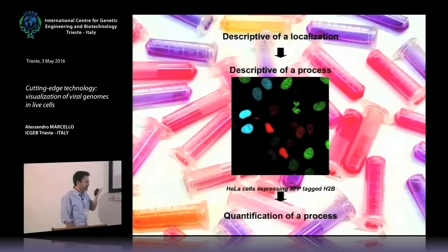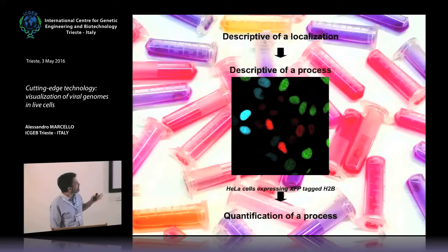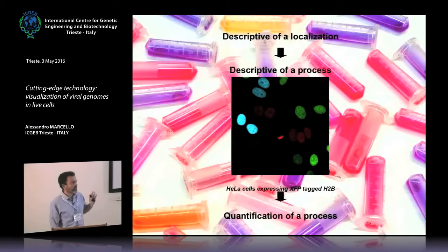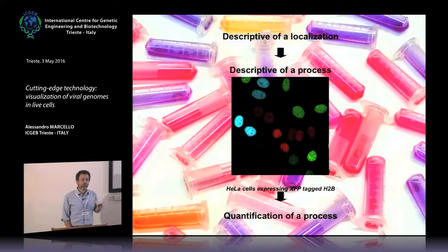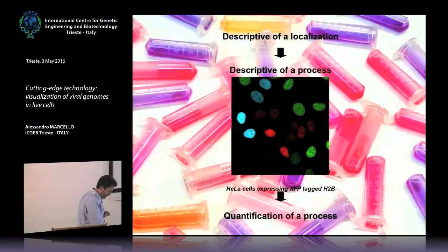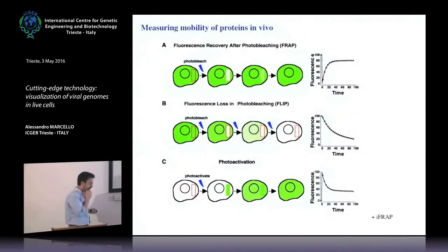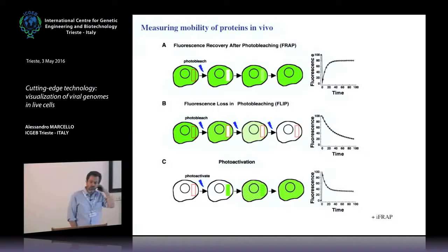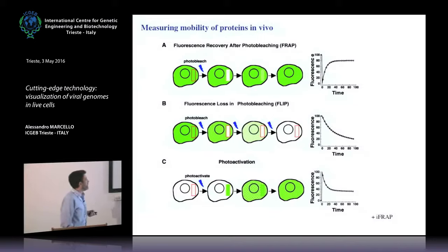As David was saying this morning, you can use fluorescent proteins also to quantify processes in cells. We wanted to go more into quantification — to get real numbers from what you observe in a cell, and in our case, in an infected cell. So we started to play with some techniques, with the help of Paolo Maiuri, who will be talking tomorrow. He joined the lab as a PhD student with a physics background, and we started to explore ways of perturbing the living cell to derive quantitative measures of the processes we were interested in.